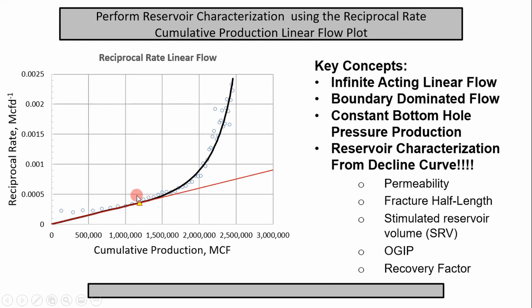From this line and this point right here — which is the time at which the end of linear flow ends — we can get permeability, fracture half length, stimulated reservoir volume, original gas in place per cluster, and also recovery factor. What we're really after more than anything is permeability and fracture half length, because fracture half length tells us how far — it's important for well spacing. You need to know this number in order to drill future laterals and space them apart appropriately. So that's what we're really after: stimulated reservoir volume and recovery factor that comes along with how far your clusters are spaced.